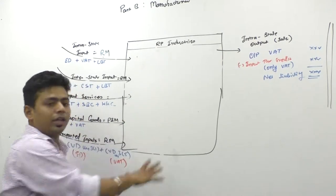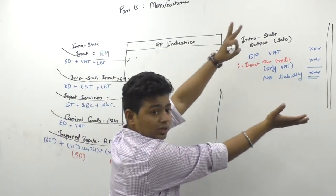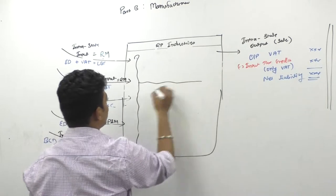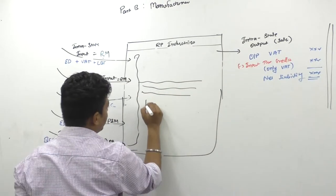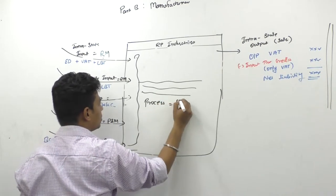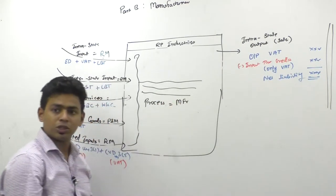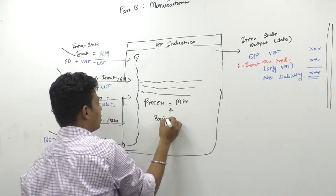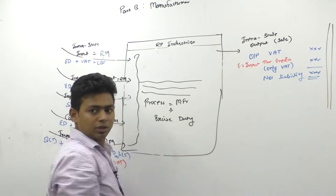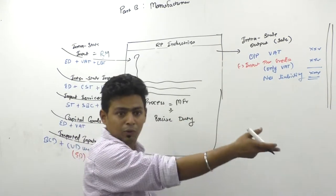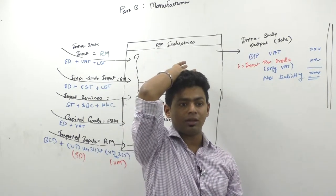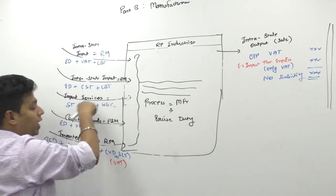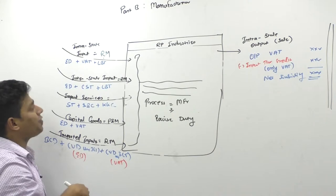As a manufacturer, we are getting this much input — but can I sell it as it is? No. I will do a manufacturing process in my factory. This process equals manufacture. Whenever you manufacture in India, you are liable for excise duty. You have to pay excise duty now because you manufactured goods in India.